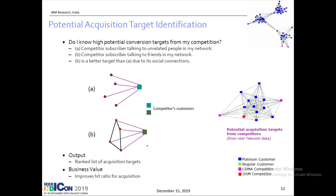Suppose I am Airtel and I want to attract people from Vodafone. Consider this scenario: one person is on Vodafone and four others are on Airtel, and they are calling each other. I want to send a message to only one person from another operator — do I target the one who seems to know these interconnected Airtel friends, or one who is making random business calls? I target the bottom one, because he seems to know people who know each other, suggesting these are real friends. This way I can acquire targets more smartly than doing it blindly.